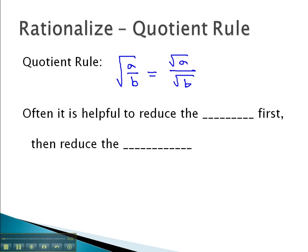We can also use this property in reverse if convenient, and if we've got square roots on top and bottom, we can rewrite them as a square root over the entire fraction. Often it is helpful to reduce the fraction first, and then reduce the radicals.